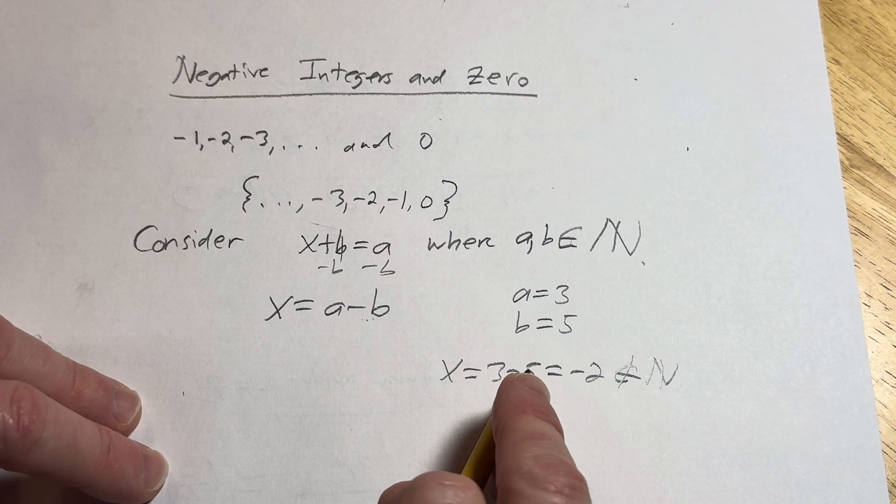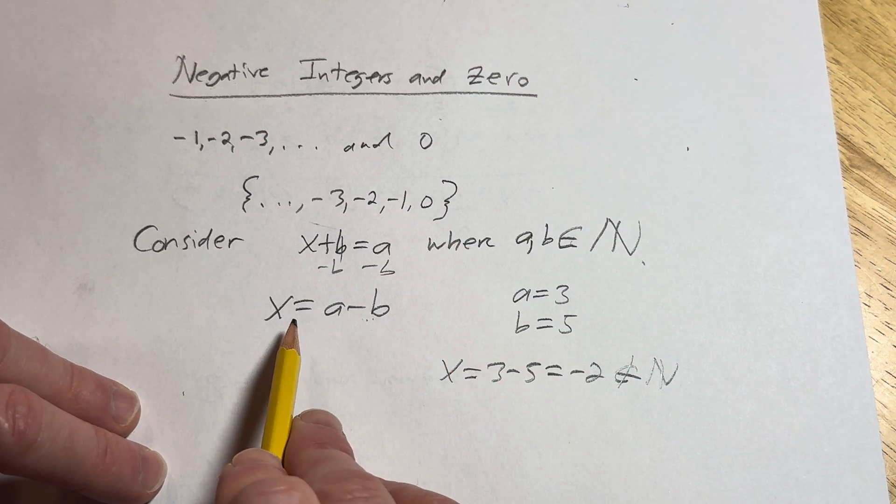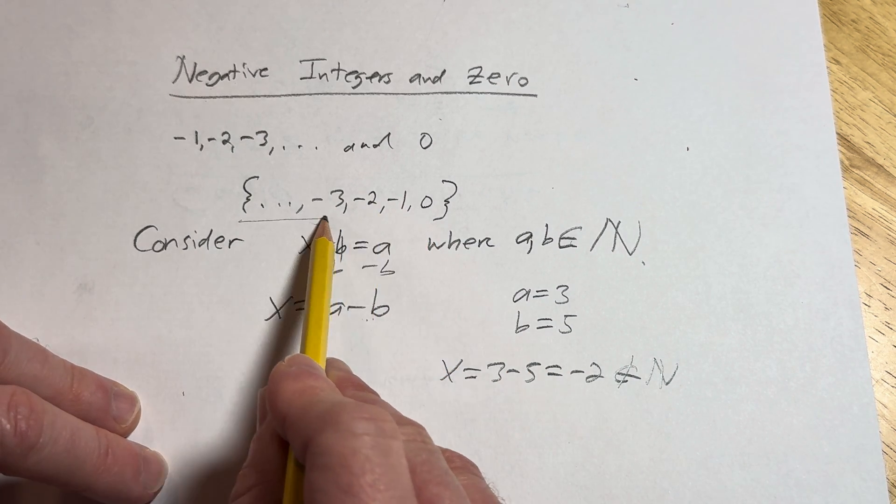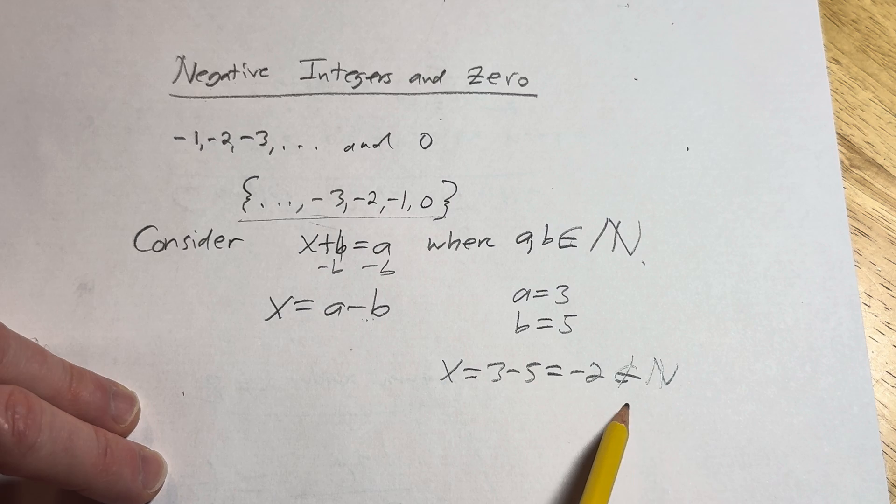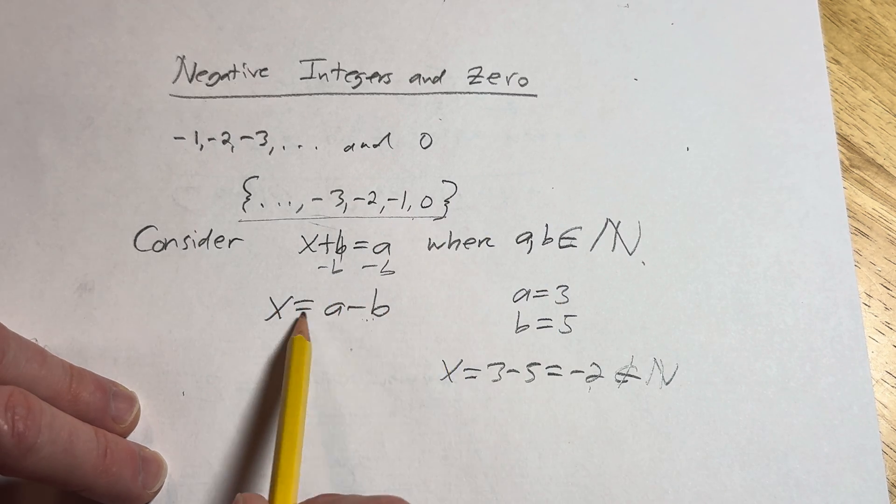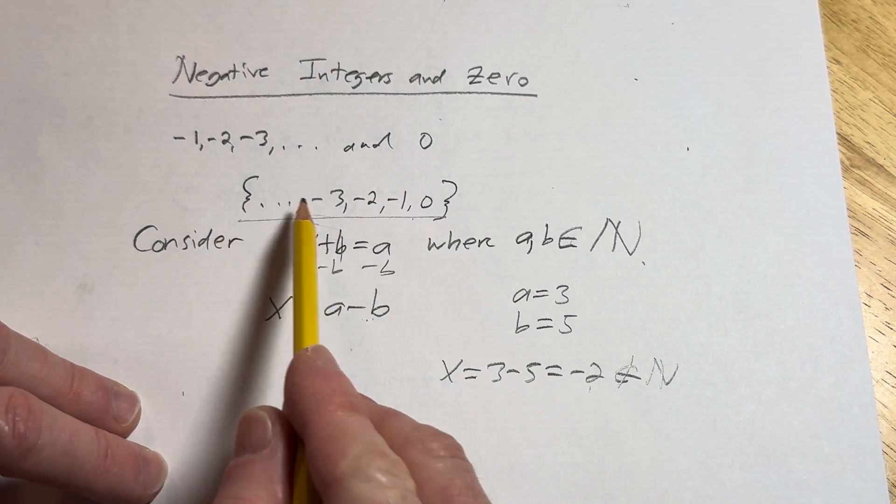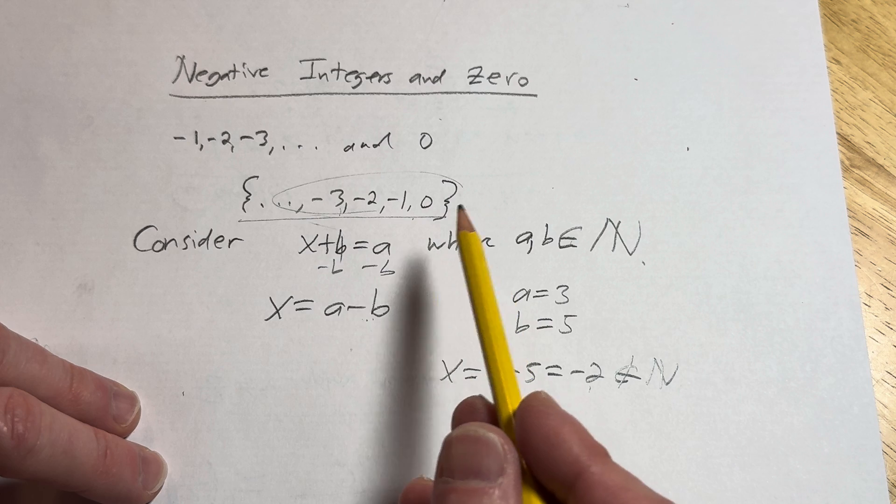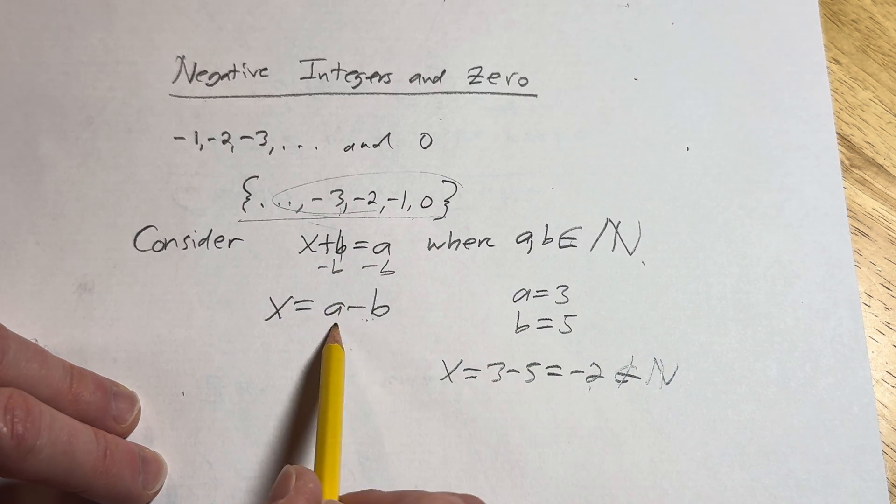So it is not an element in that set. So what do we do? Well, we create this new set that allows for negative numbers and zero. And that's where these numbers came from. This operation is called subtraction, the inverse of addition.